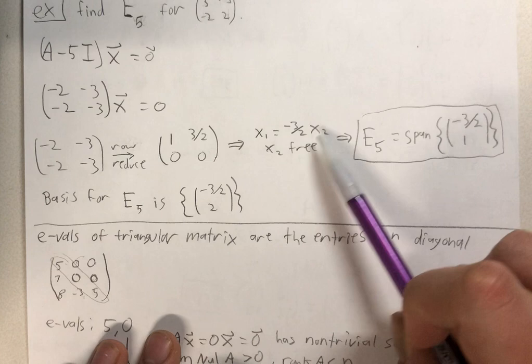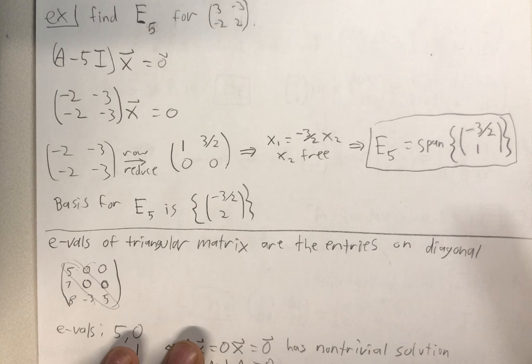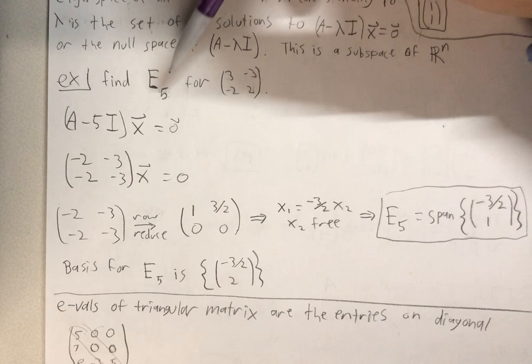And so the eigenspace associated to 5 is the span of negative 3 halves, 1. And if a question looks like this, but they're asking for the basis of E5, it's just the same thing, but don't say the word span.